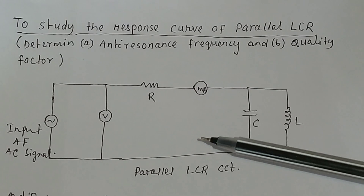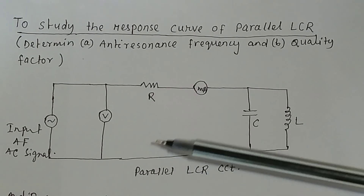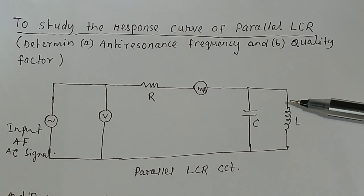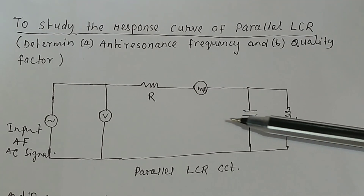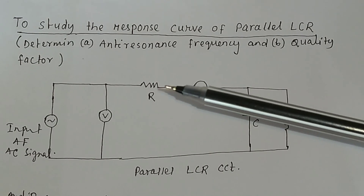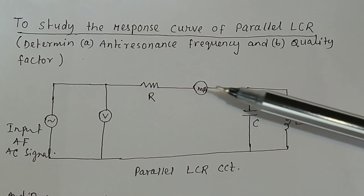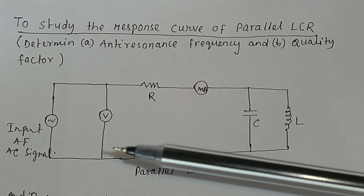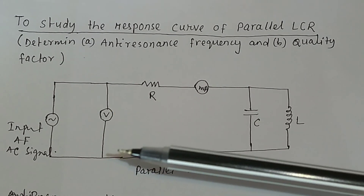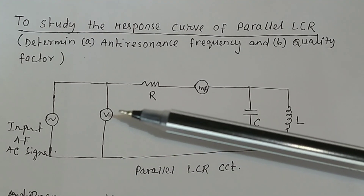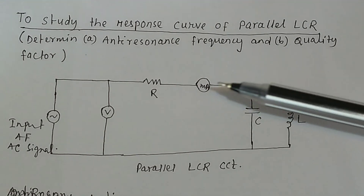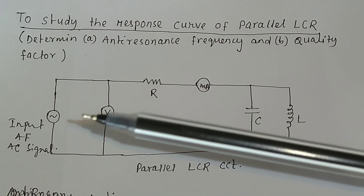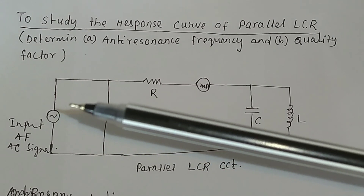This is the circuit diagram for the parallel LCR circuit. This is the resistance, this is the capacitor, and this is the inductor. All three — capacitor, inductor, and resistor — are connected in parallel. One terminal is connected to this side, another terminal to the other side. The voltmeter is connected in parallel, and the milliammeter is connected in series. An input audio frequency AC signal is given here.